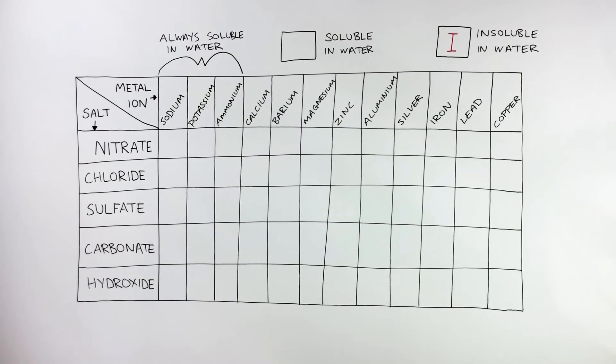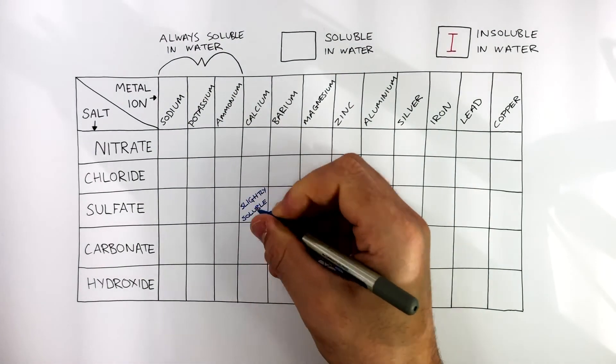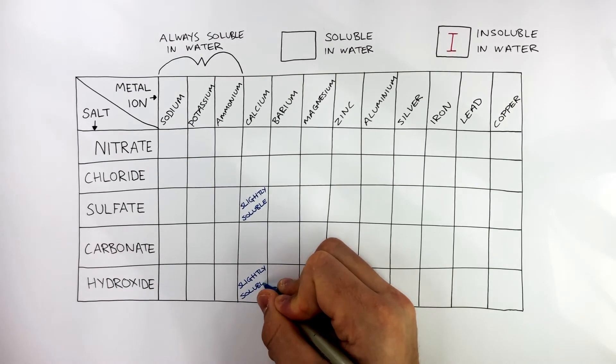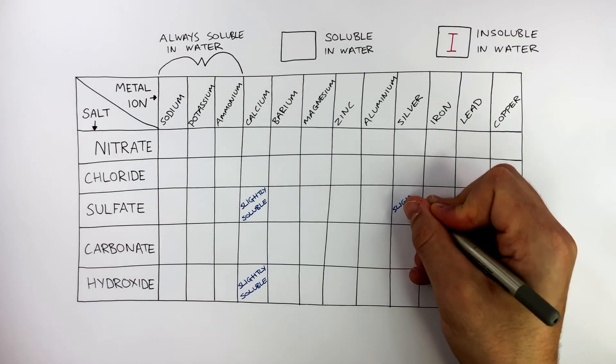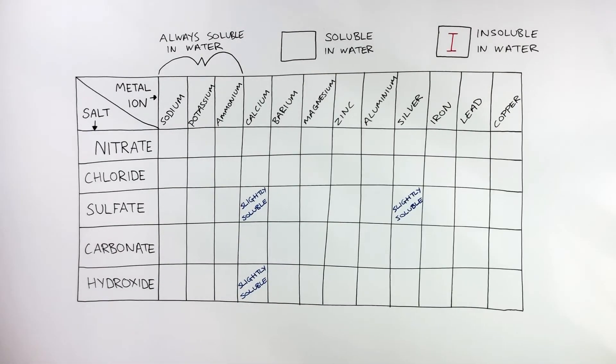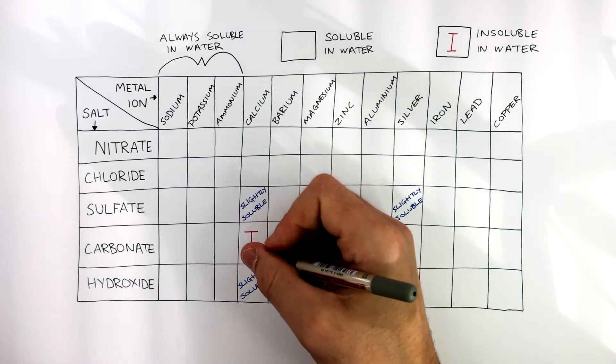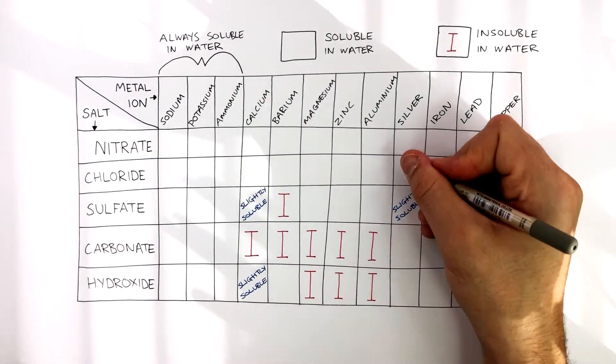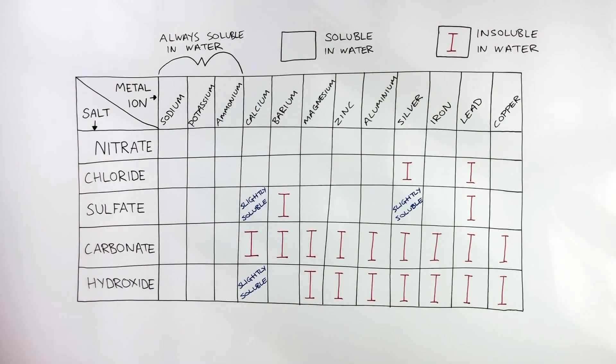whereas calcium sulfate, calcium hydroxide and silver sulfate are salts which are slightly soluble in water. Whereas all of these salts, where I'm writing in the capital I in red, these are all salts which are insoluble in water.